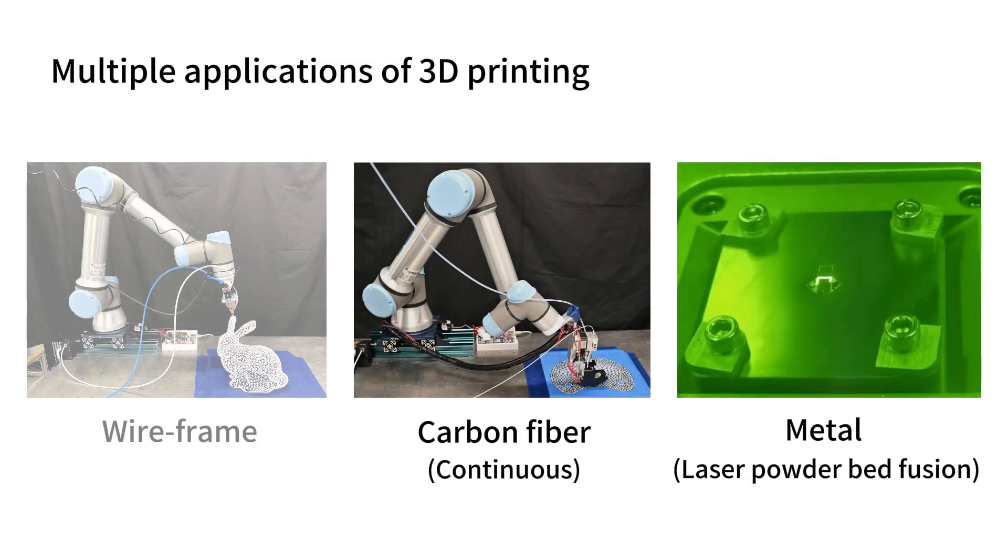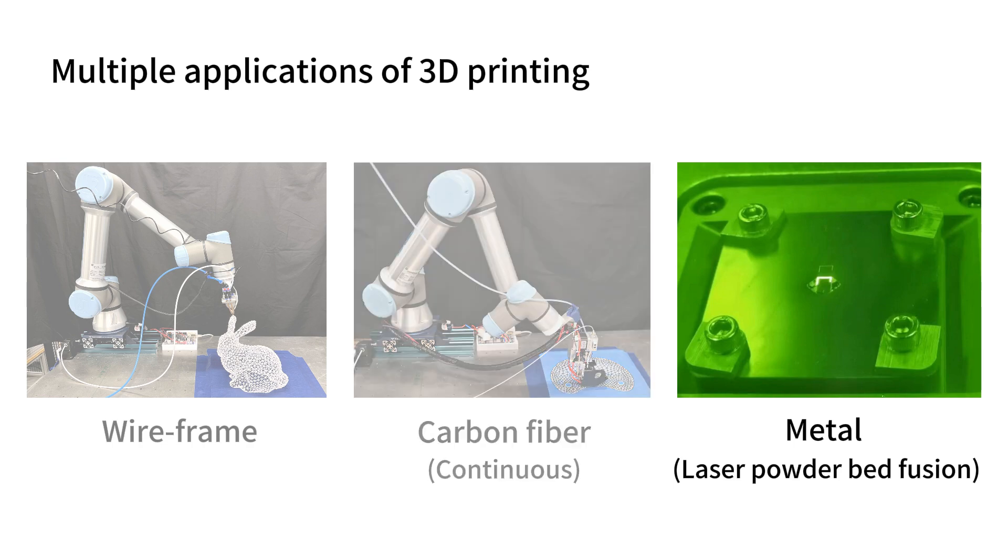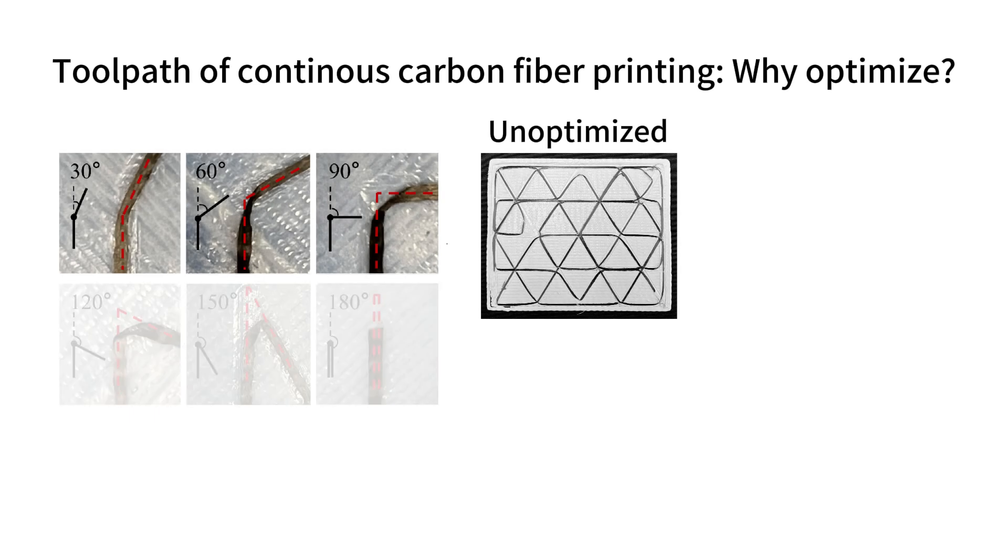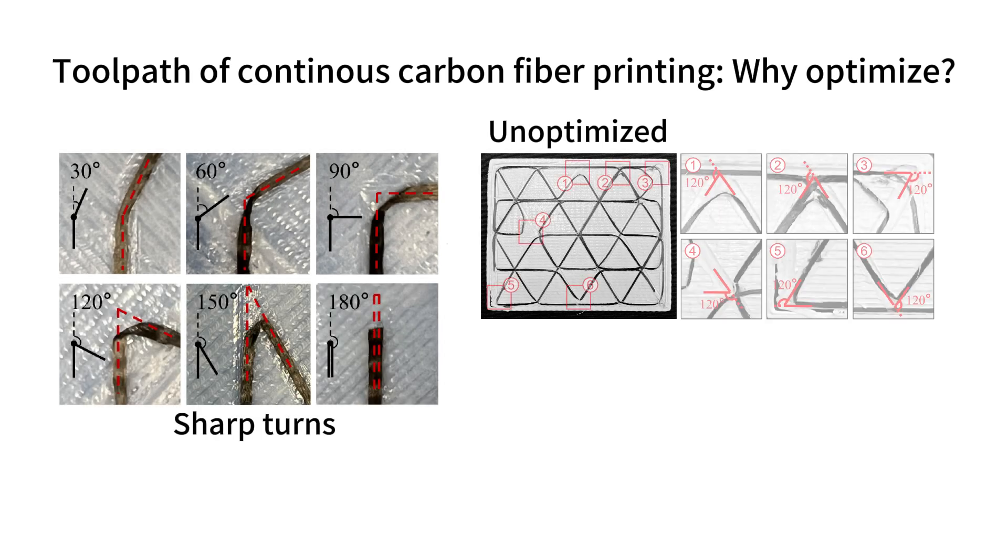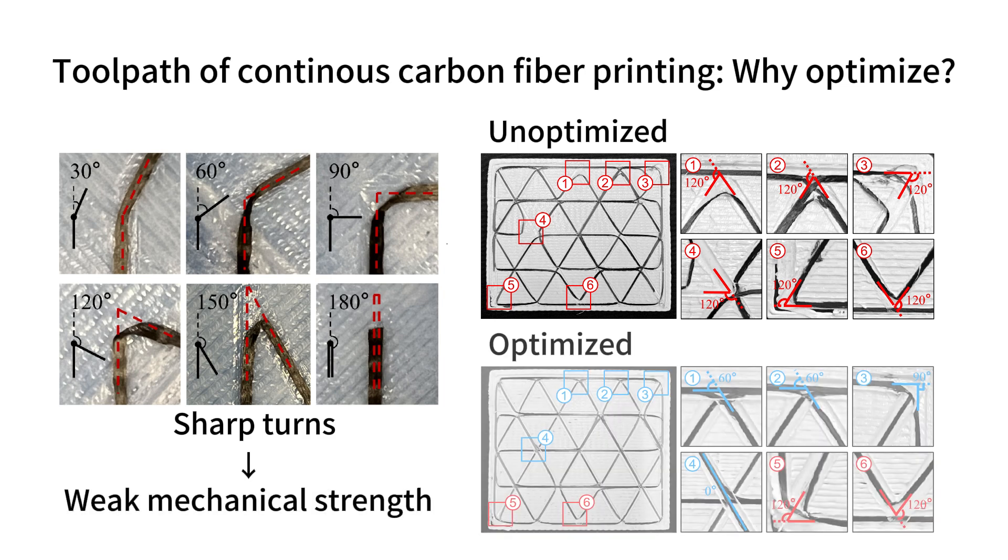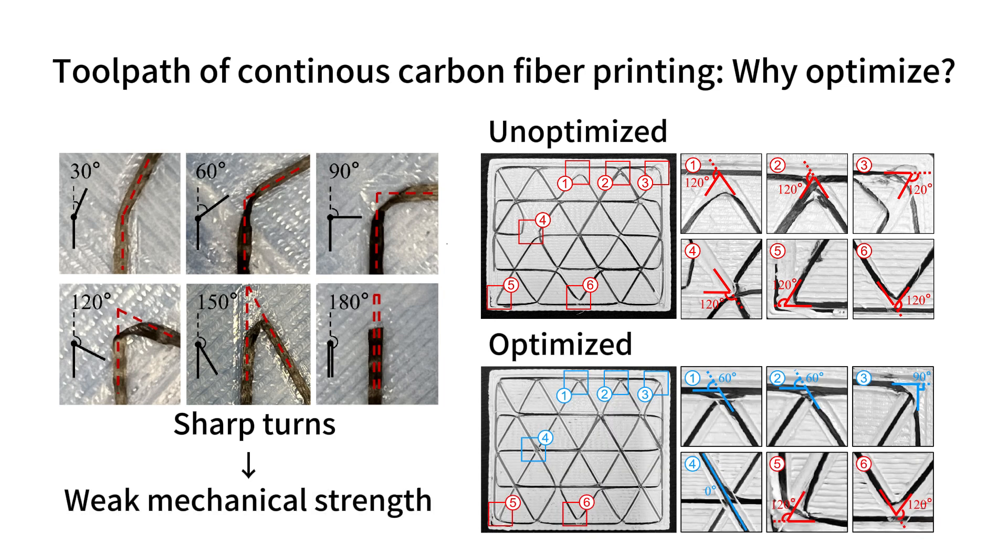We now demonstrate the application of our planner in two other 3D printing processes. Let's first introduce its application in continuous carbon fiber printing. We aim to minimize the number of sharp turns as they will reduce the printing quality and in turn generate parts with weak mechanical strength. On the optimized path, the number of sharp turns can be significantly reduced.